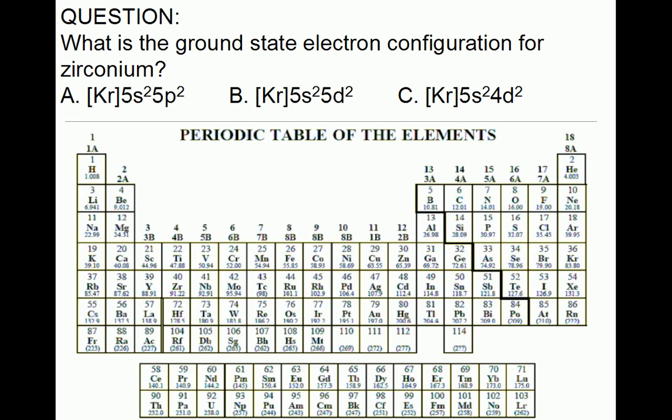First, we need to find zirconium on the periodic table. Zirconium is element 40. That means it has 40 protons and 40 electrons.